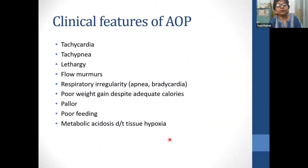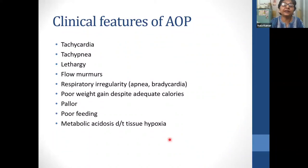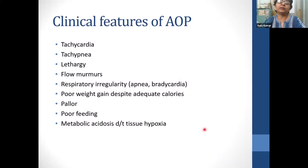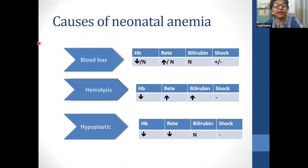Clinical features of anemia of prematurity: the baby may have tachycardia, tachypnea, lethargy, flow murmurs, respiratory irregularities such as apnea with bradycardia, and poor weight gain despite adequate calories — 120 to 200 kcal/kg — because protein intake is not adequate. The baby may present with pallor, poor feeding, and on investigation may have metabolic acidosis due to tissue hypoxia. Causes of neonatal anemia include blood loss, hemolysis, or decreased production — anemia of prematurity falls under this last category as a hypoplastic, hypo-regenerative anemia.